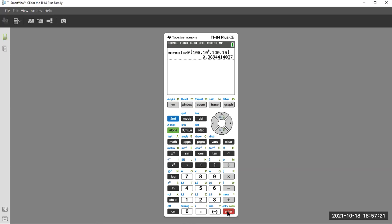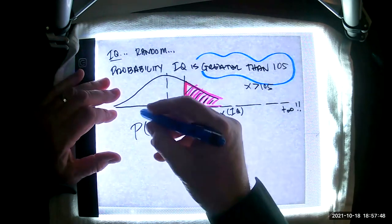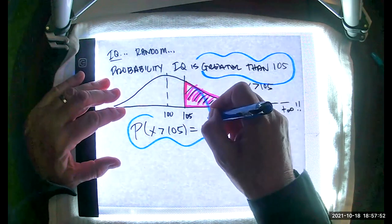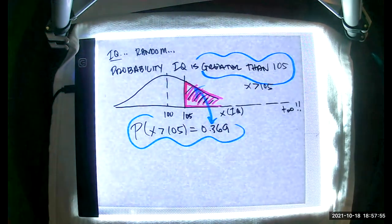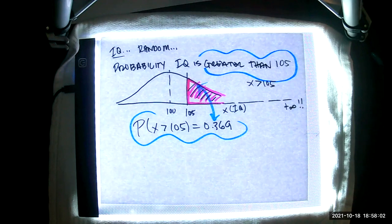And there we go. 0.36944 and change, 369, 0.369. Again, we have this issue. Where the picture helps me set up the problem. The probability that X is greater than 105 equal to 0.369.